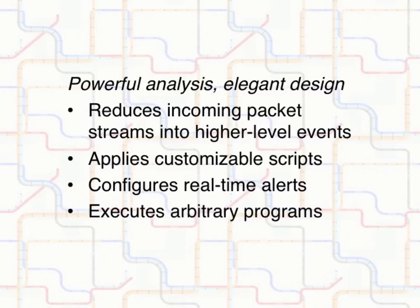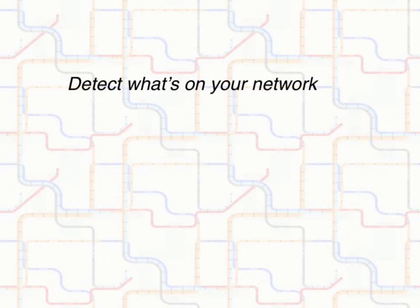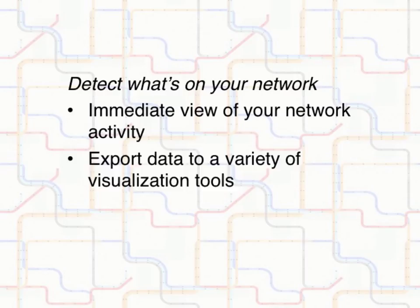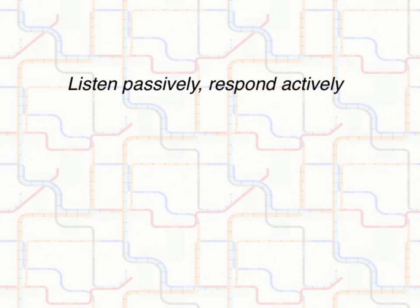This simple design allows you to configure an array of real-time alerts, execute arbitrary programs on demand, and log data for later use. Bro's out-of-the-box installation gives you an immediate view of your network activity, including file types, software, and networked devices. You can export this data to a variety of visualization tools to provide meaningful interpretations to a broader audience.